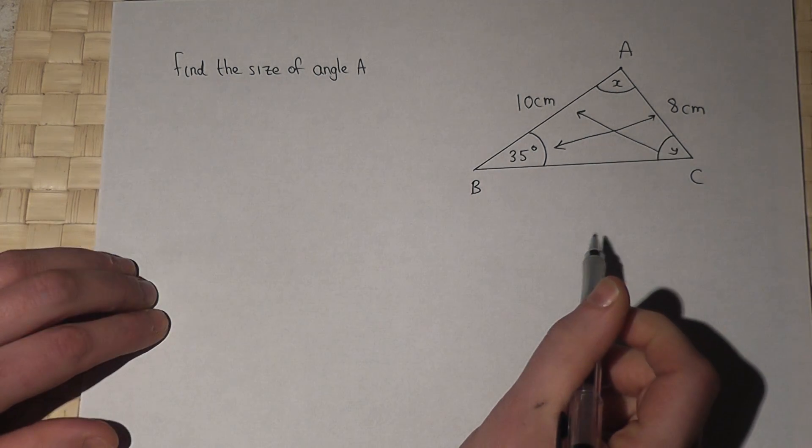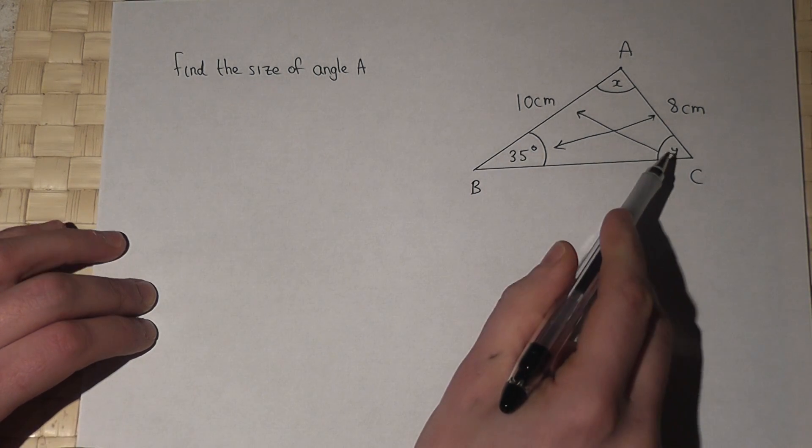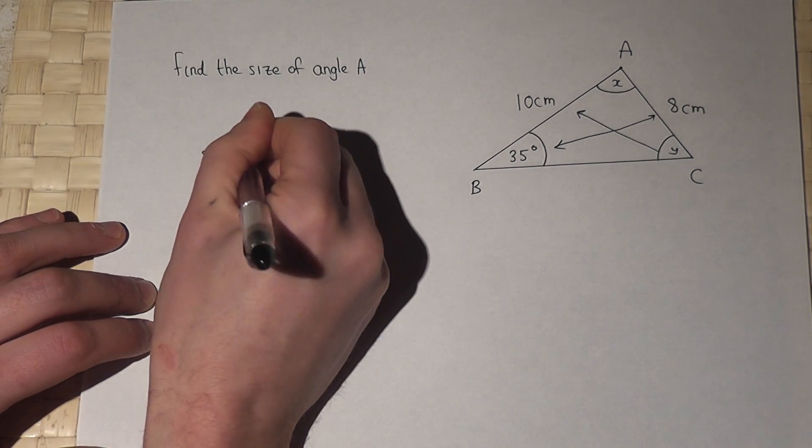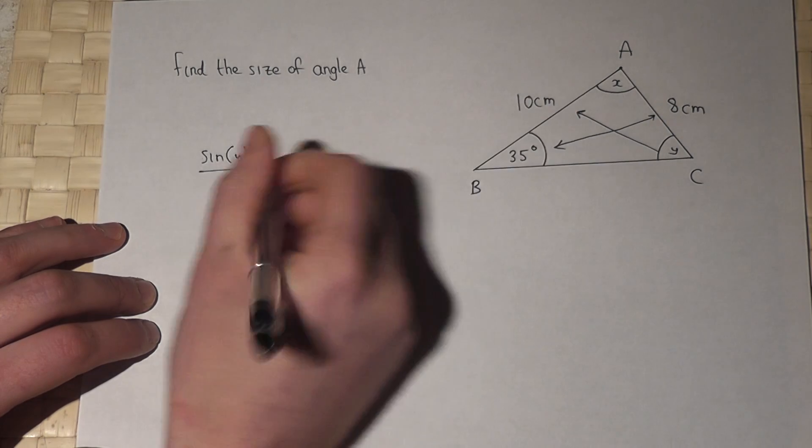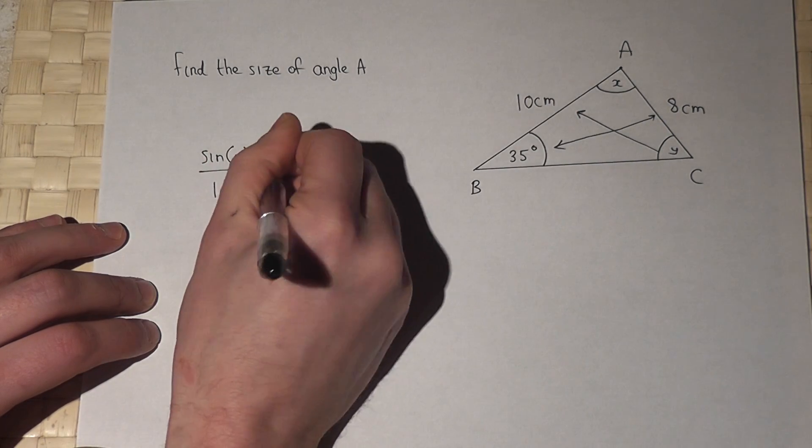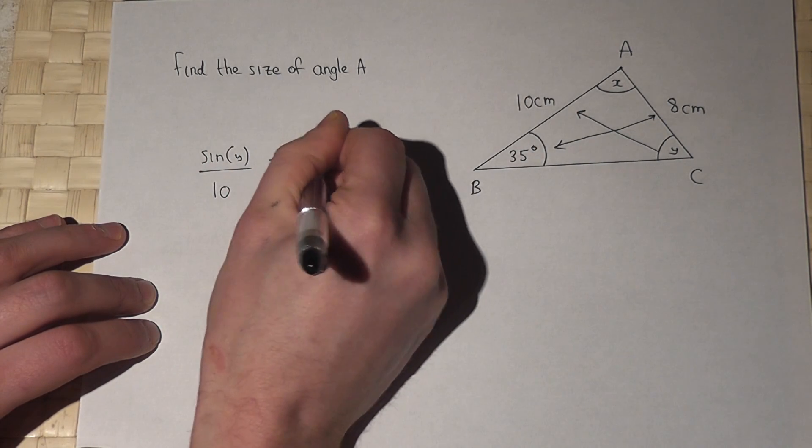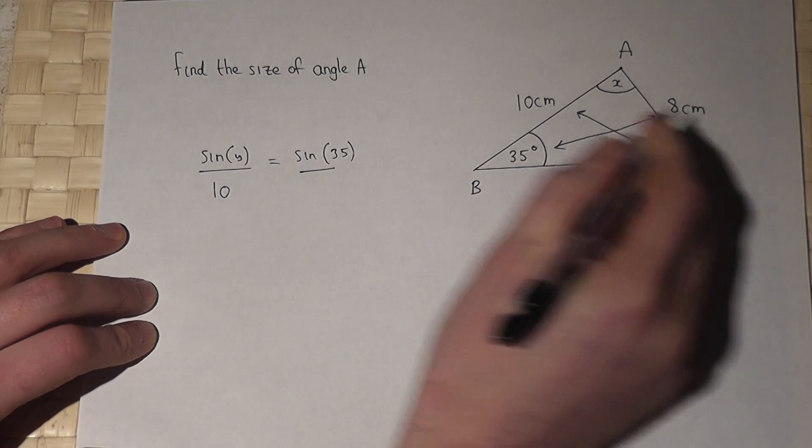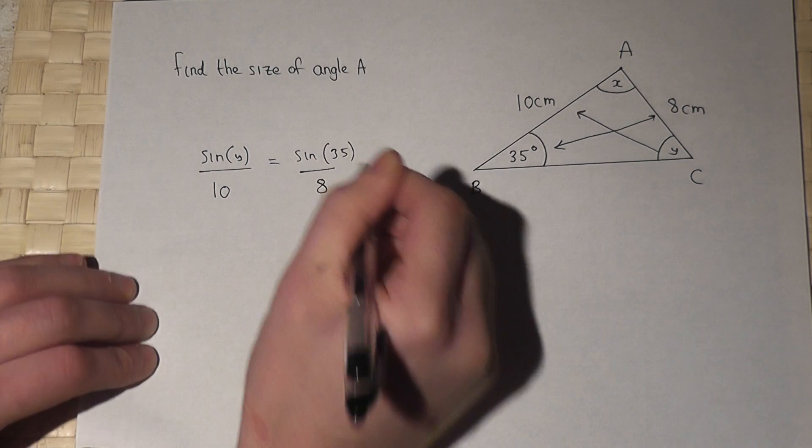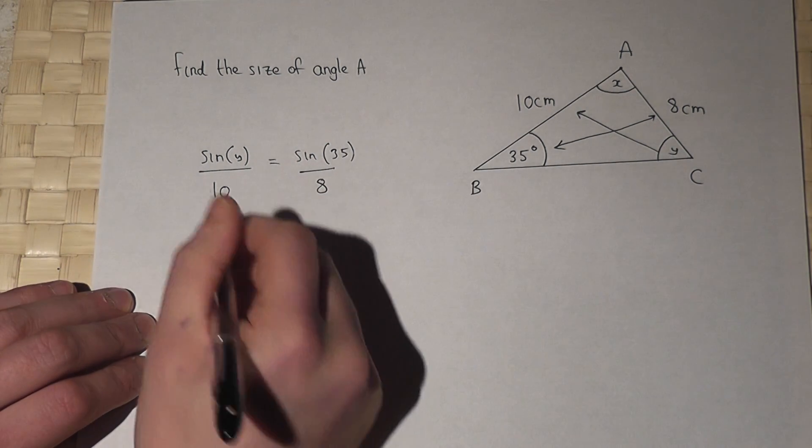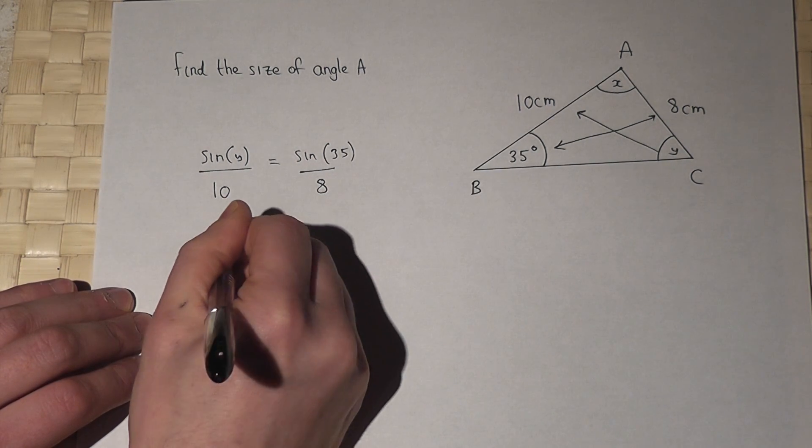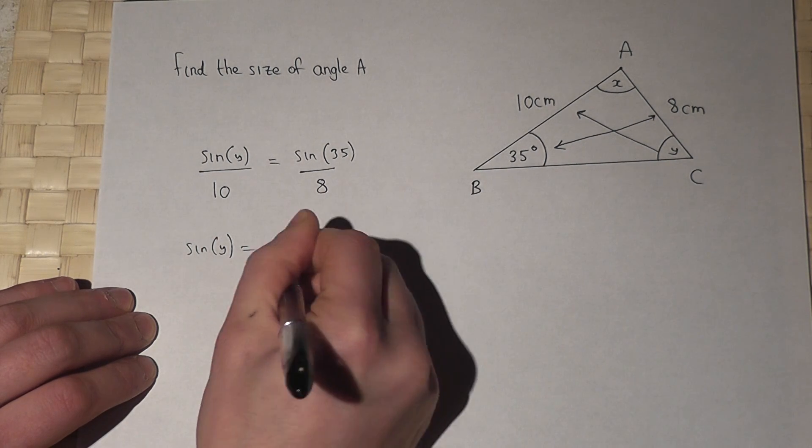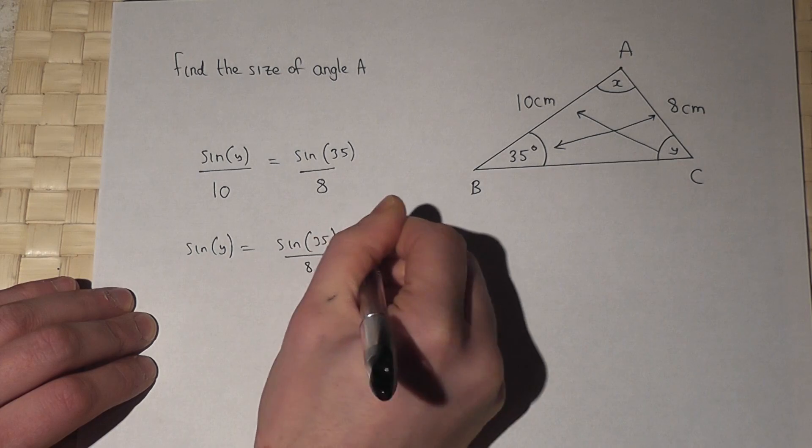Now I can use the sine rule to find Y. Sine of Y over its opposite side must equal sine of 35 over its opposite side. If I times by 10, then sine of Y must equal sine 35 over 8 times by 10.